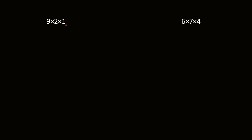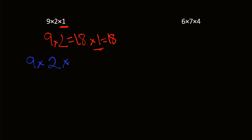Let's move on to our next one. We have 9 times 2 times 1. We can use the associative property for this one too, but since the third factor is 1, we know that whatever you multiply by 1 is equal to itself. So 9 times 2 is 18, and 18 times 1 is equal to 18. We can also group 2 and 1: 2 times 1 is 2, and then 9 times 2 is 18 again. So 9 times 2 times 1 is equal to 18.